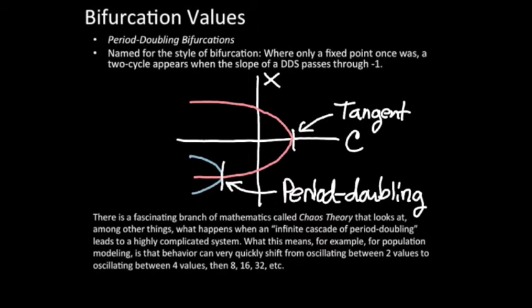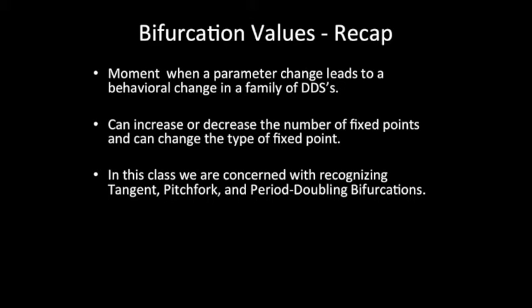Okay, so just to recap what we've looked over in this video: a bifurcation value is a moment when a parameter change leads to a behavioral change in a family of DDS's. The number of fixed points and period points was some sort of a thing, and then when you reach the bifurcation value the roles change and there's a different set of things going on.